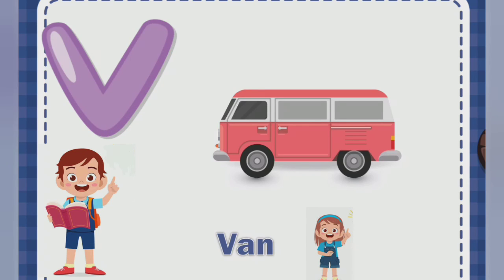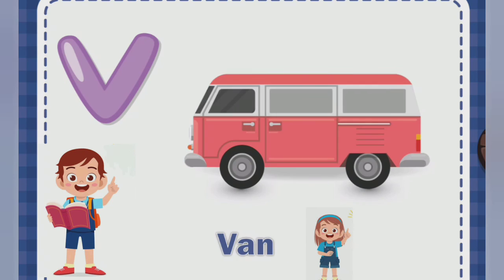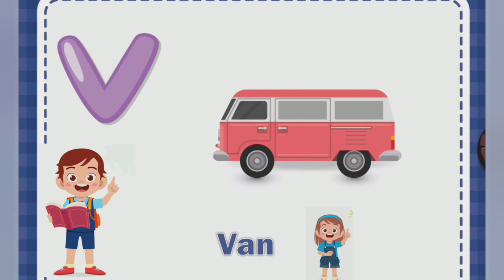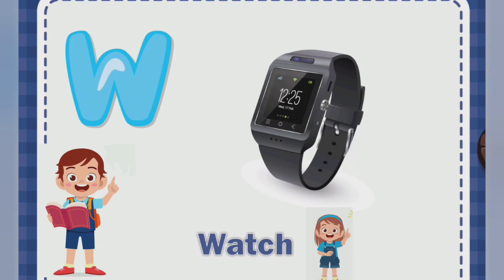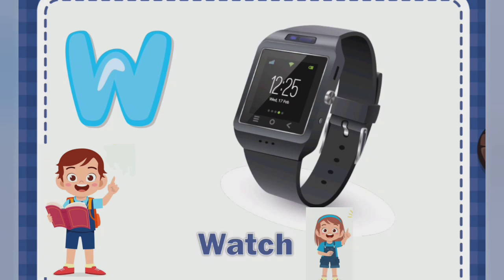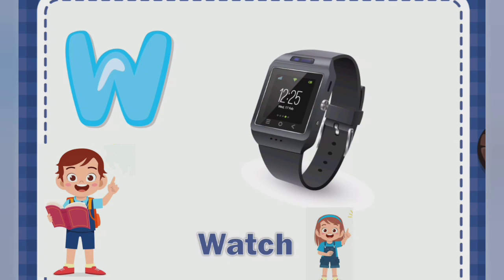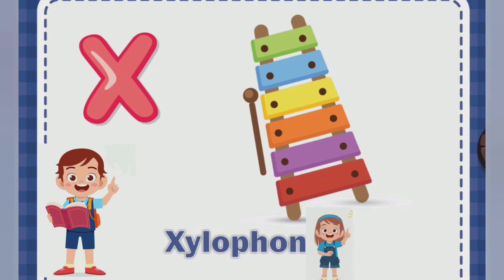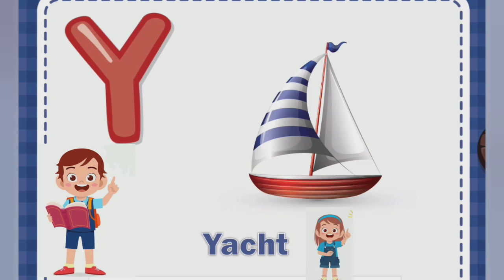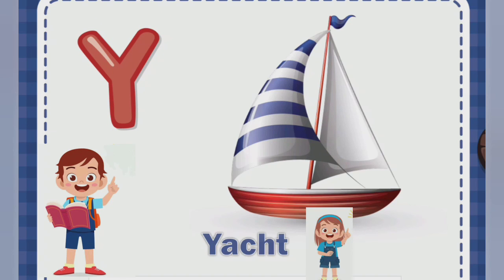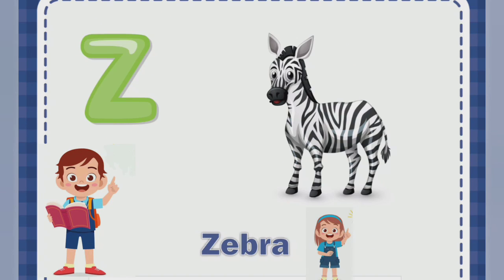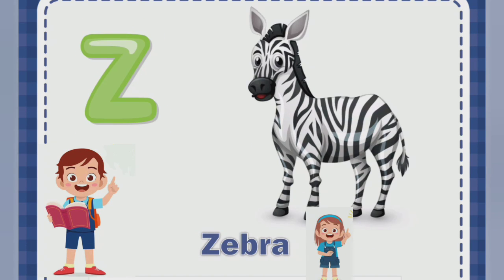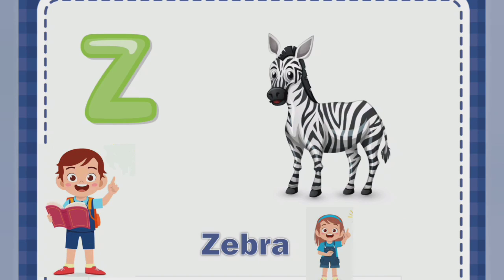...umbrella, V for van, W for watch, X for elephant, Y for yacht, Z for zebra.